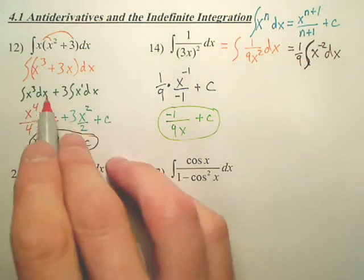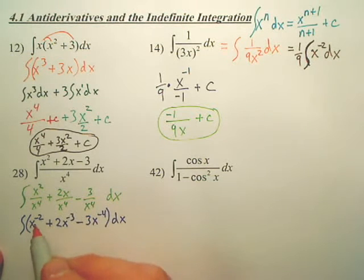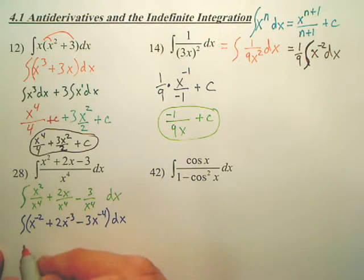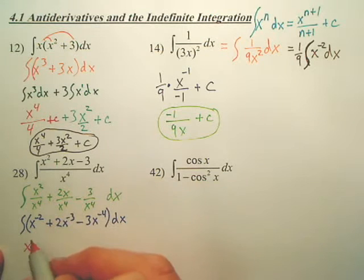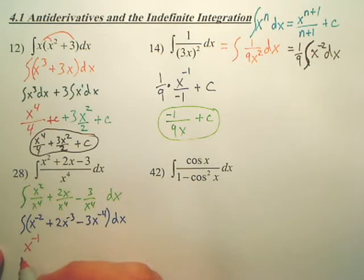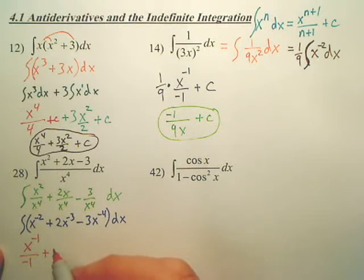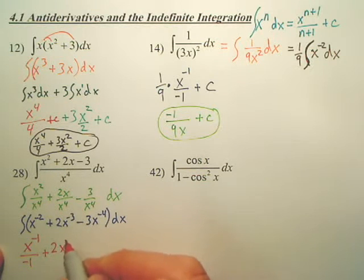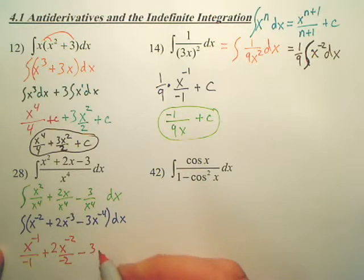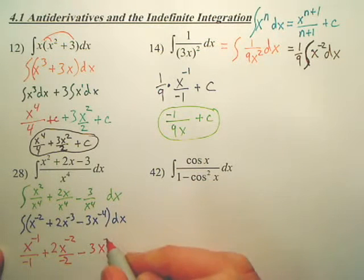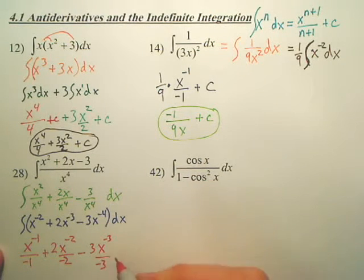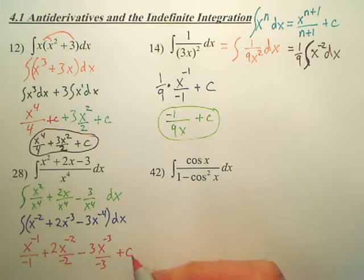So, add 1 to negative 2, you get what? Negative 1. And then you divide by negative 1. Add 1 to negative 3, and you get negative 2. Add 1 to negative 4, you get negative 3, and divide by negative 3 plus c.